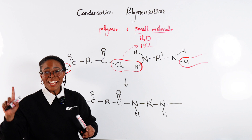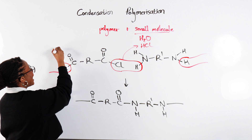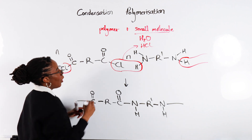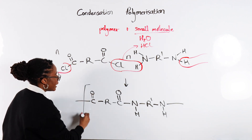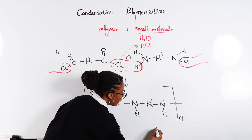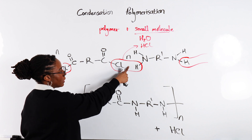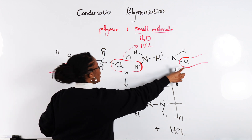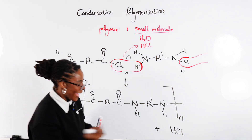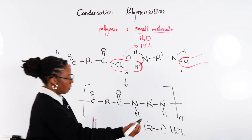Let's turn this into an equation. If we had n of our diacyl chloride and n of our diamine, that would give us a polymer of chain length n. In terms of how many HCl molecules we are losing: we lose one HCl between them, so n, then we lose another HCl on the other side, so that's another n — making 2n. But to take into account the ones at the end, we put that minus 1, so we end up with 2n minus 1 HCl.